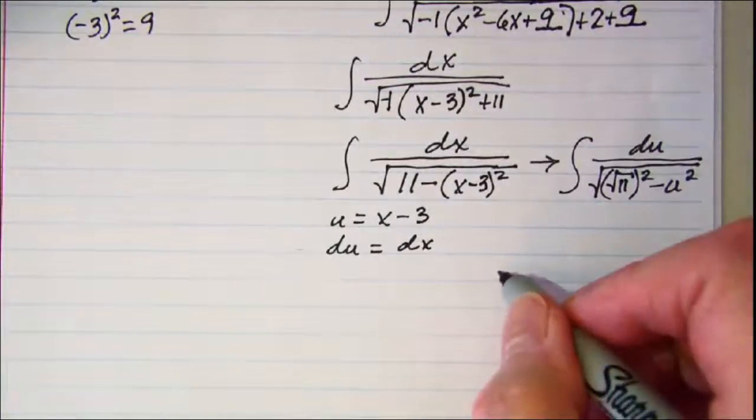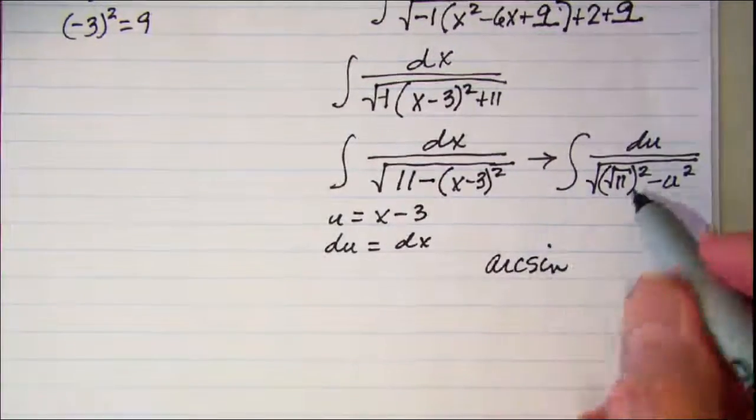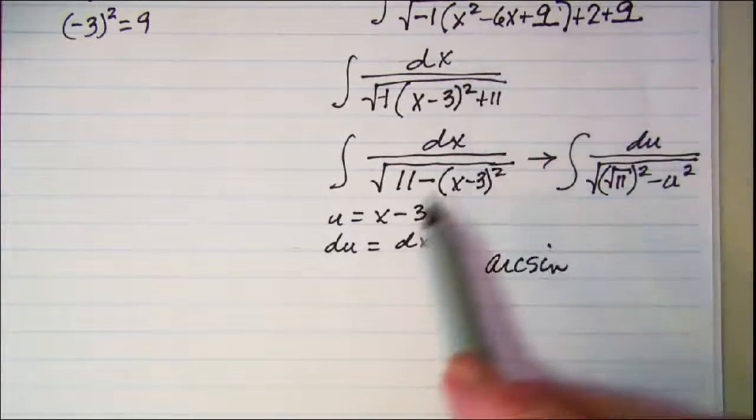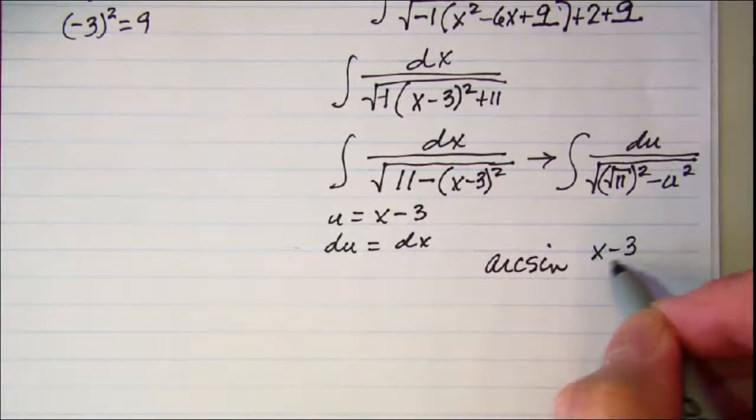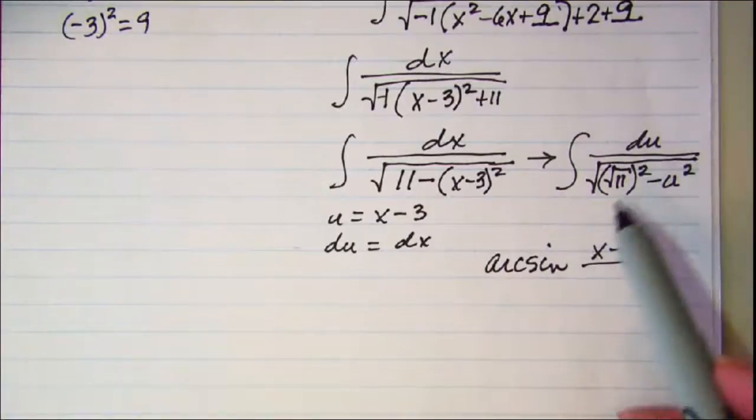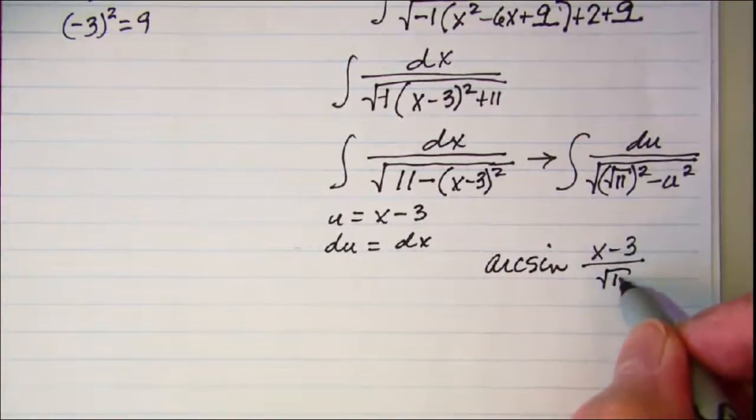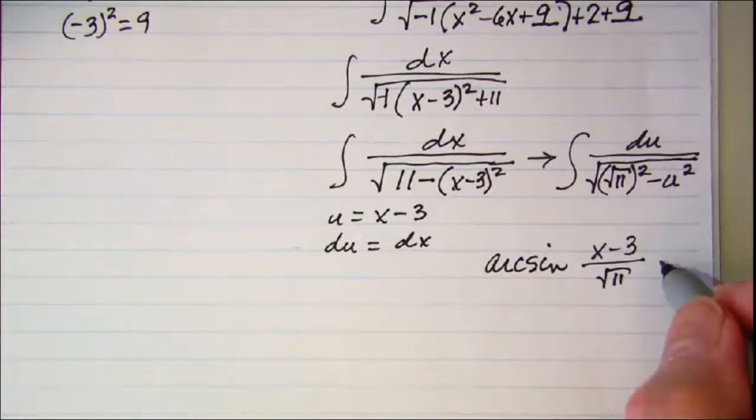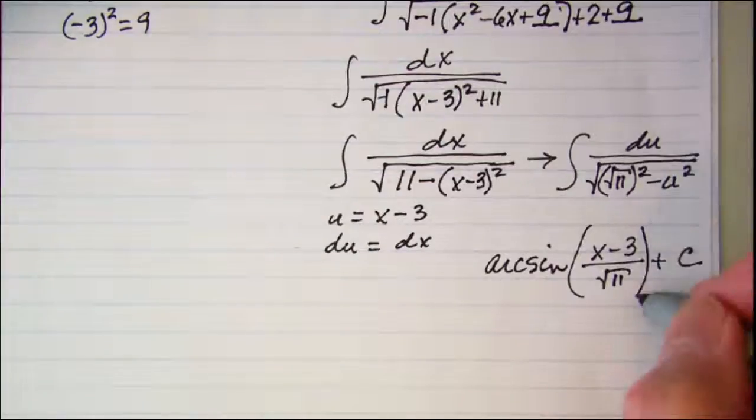This will be arcsine u which was x minus 3 over a which was square root of 11 plus a constant. This probably needs to be in parenthesis.